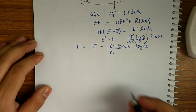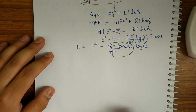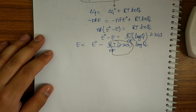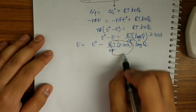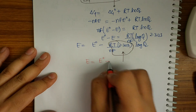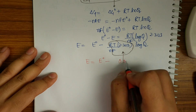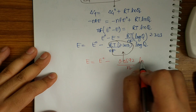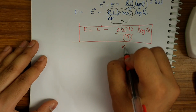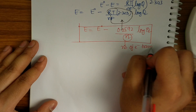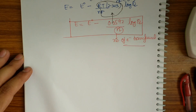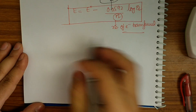So I get E equals E0 minus RT/NF times 2.303 log Q. On careful observation, RT/F times 2.303 is a constant when temperature is fixed — for example, at 25 degrees Celsius. So this whole value becomes a constant, giving us the Nernst equation: E equals E0 minus 0.0592/N log Q, where N is the number of electrons transferred and Q is the reaction quotient. This is one important equation for this chapter.